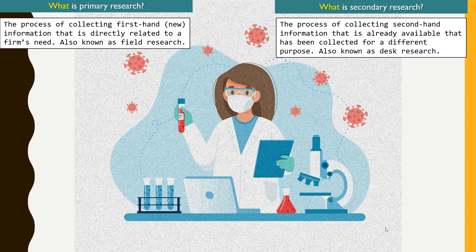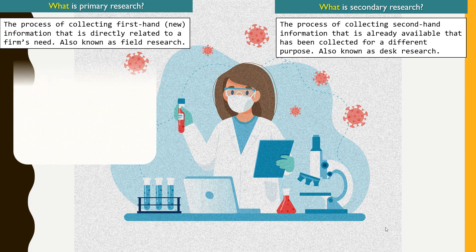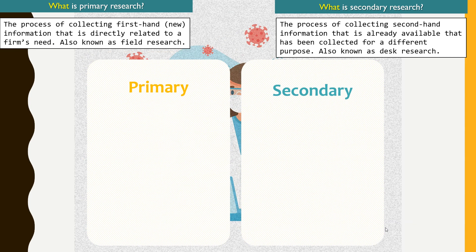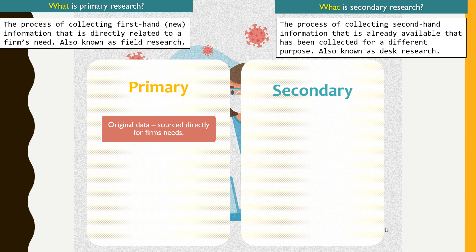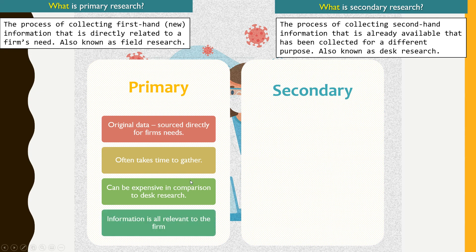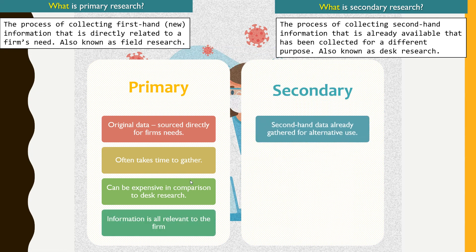Secondary research can be done from your desk, hence it is also known as desk research. In primary research, we are using original data — information sourced directly for the firm's needs. At the same time, primary research normally takes a longer time and can be more expensive in comparison to desk research, because it takes more time to conduct.